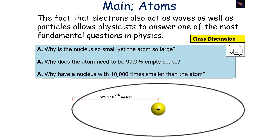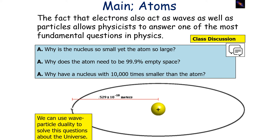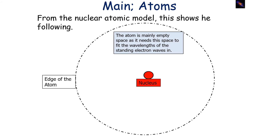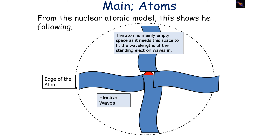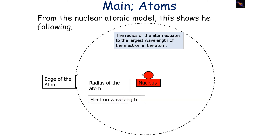The fact that electrons act as waves as well as particles allows physicists to answer one of the most fundamental questions in physics: why is the nucleus so small yet the atom so large? Why does the atom need to be 99.99999% empty space, with a nucleus 10,000 times smaller than the atom it's part of? We can use wave-particle duality to address this — the atom is mainly empty space because it needs this space to fit the wavelengths of the electron waves in, and the radius of the atom equates to the largest wavelength of the electron in the atom.